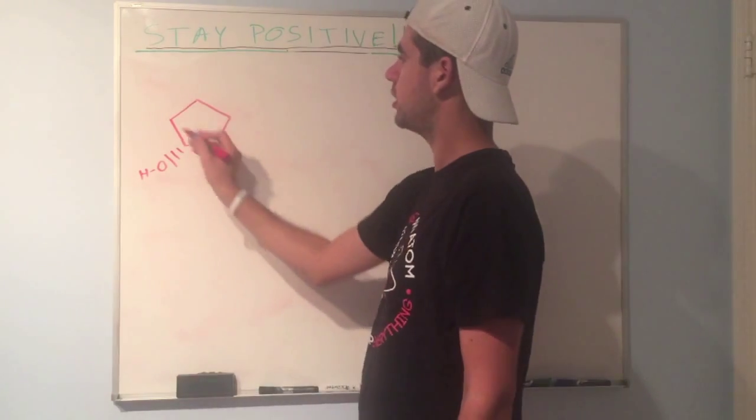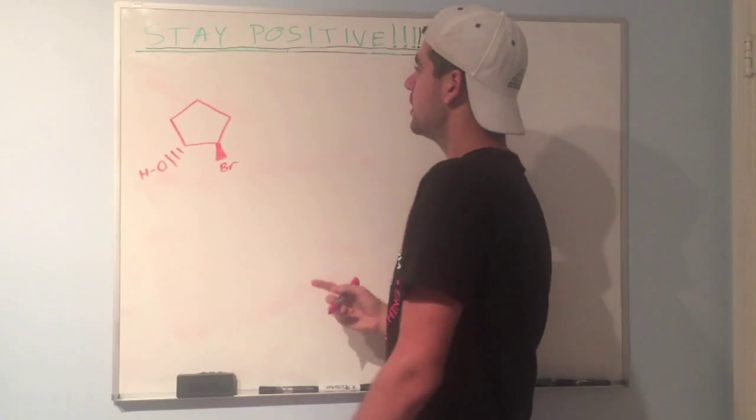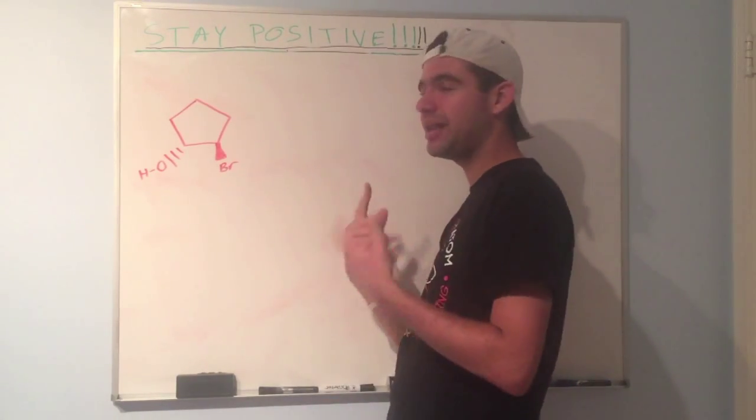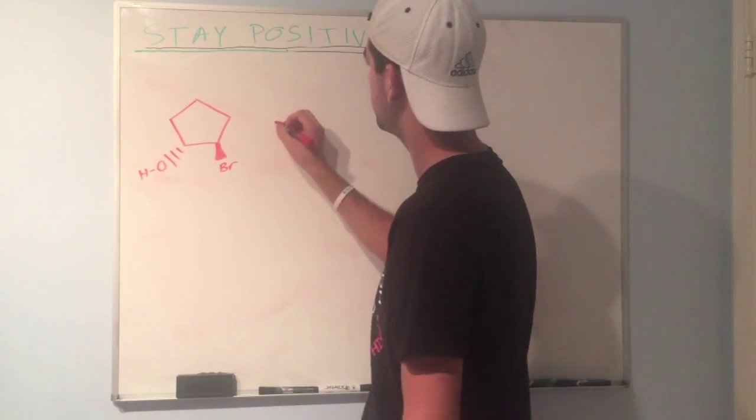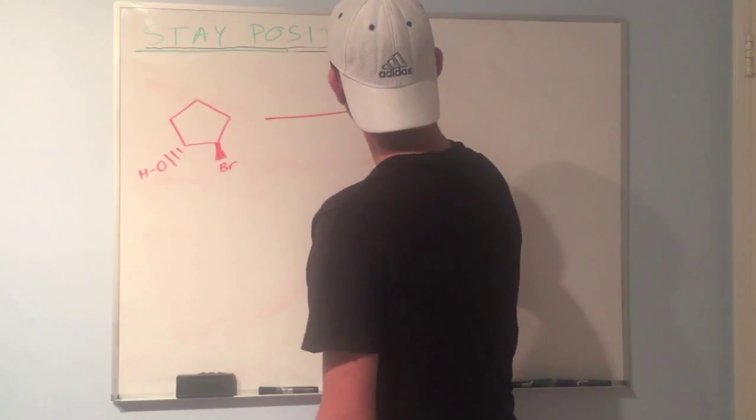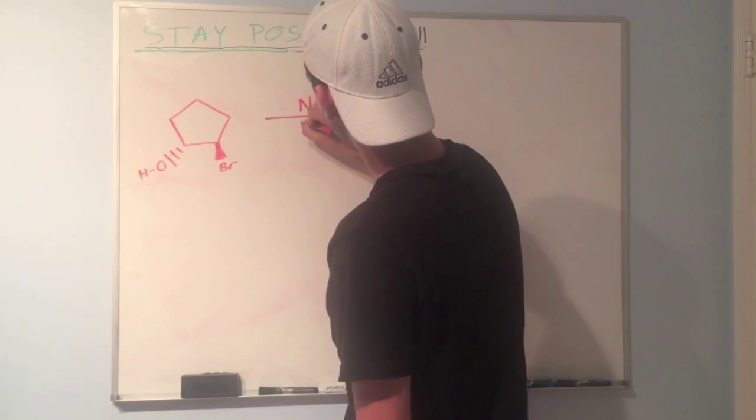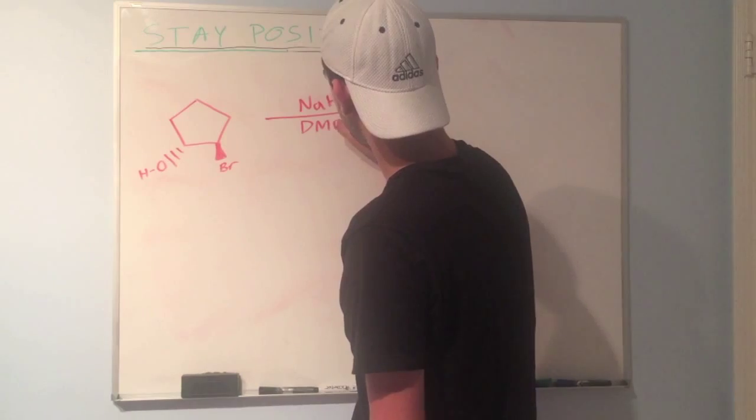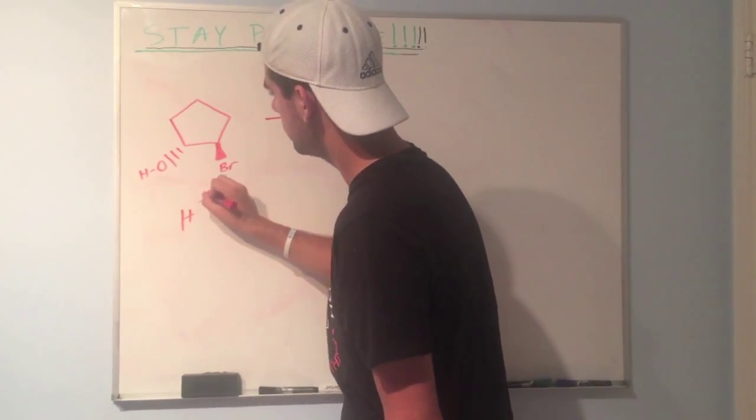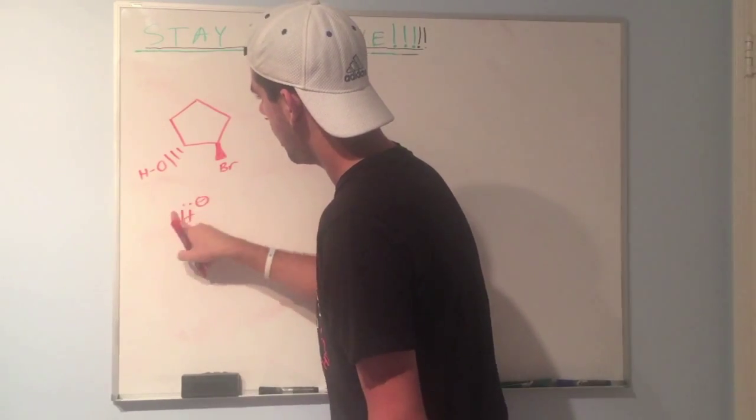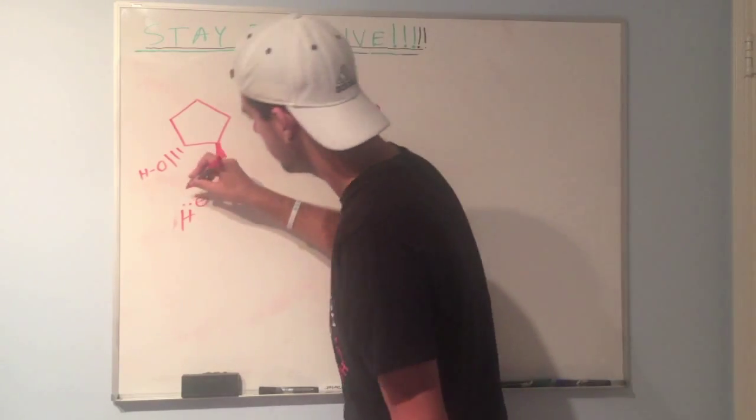We have this cyclopentane ring. We have a dashed OH coming off and a wedged Br coming off. So in your head you should be thinking intramolecular reaction. We see an alcohol and we see a leaving group. Let's react it with some NAH and DMF. I promise we're going to get into cases that don't involve NAH. It's just really important concept to know.